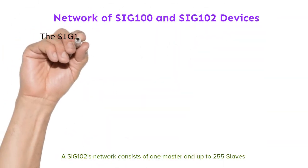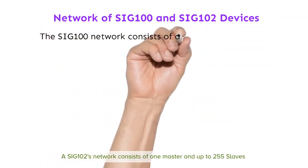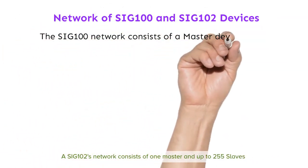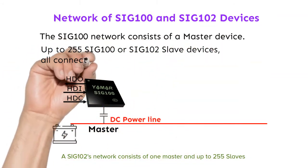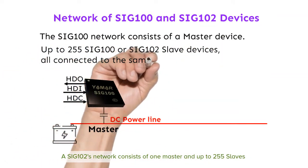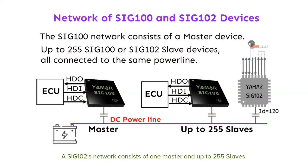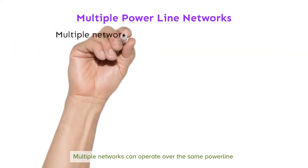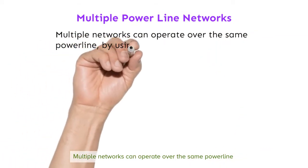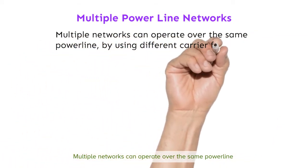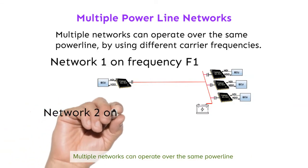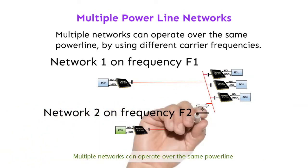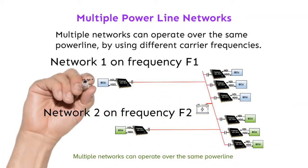The SIG100 network consists of a master device and up to 255 SIG100 or SIG102 slave devices, all connected to the same powerline. Multiple networks can operate over the same powerline by using different carrier frequencies — Network 1 on frequency F1, Network 2 on frequency F2.